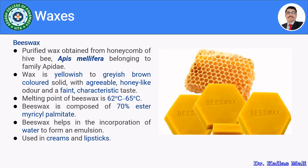There are two types of beeswax available in the market: one is the bleached type known as white beeswax, and the second is known as yellow beeswax. The melting point of beeswax is 62 to 65 degrees Celsius, and it is composed of mainly around 70% of the ester myricyl palmitate. Beeswax helps in the incorporation of water to form an emulsion and is used in the formulation of creams as well as lipsticks.